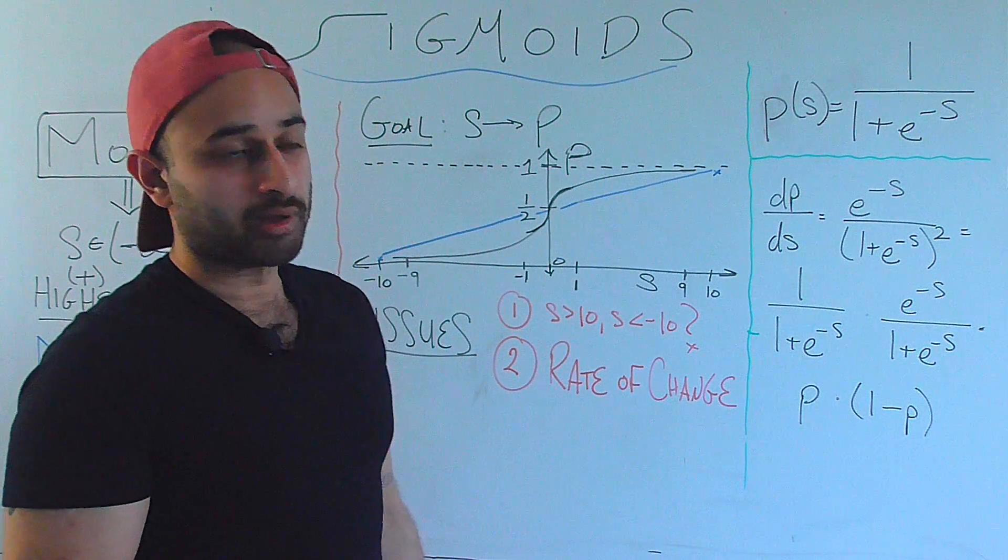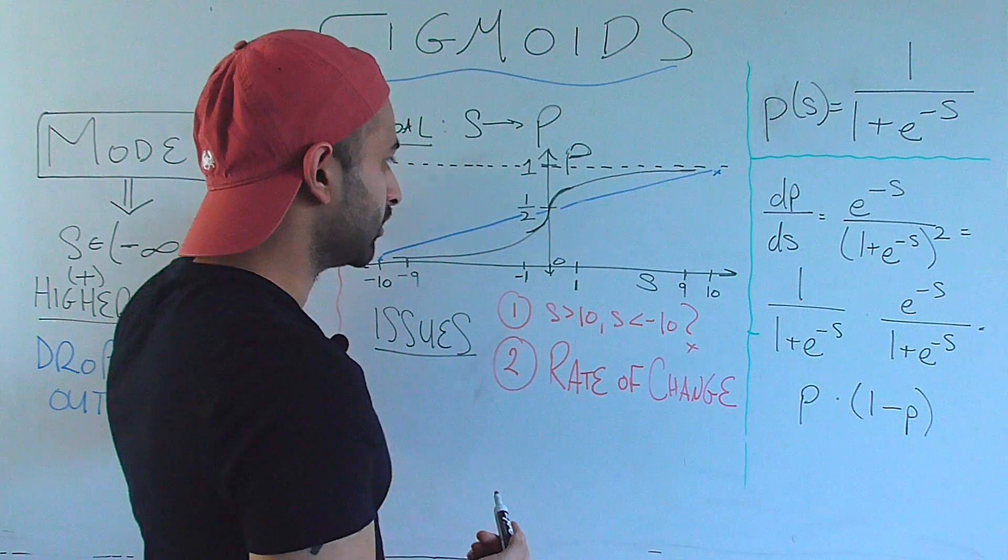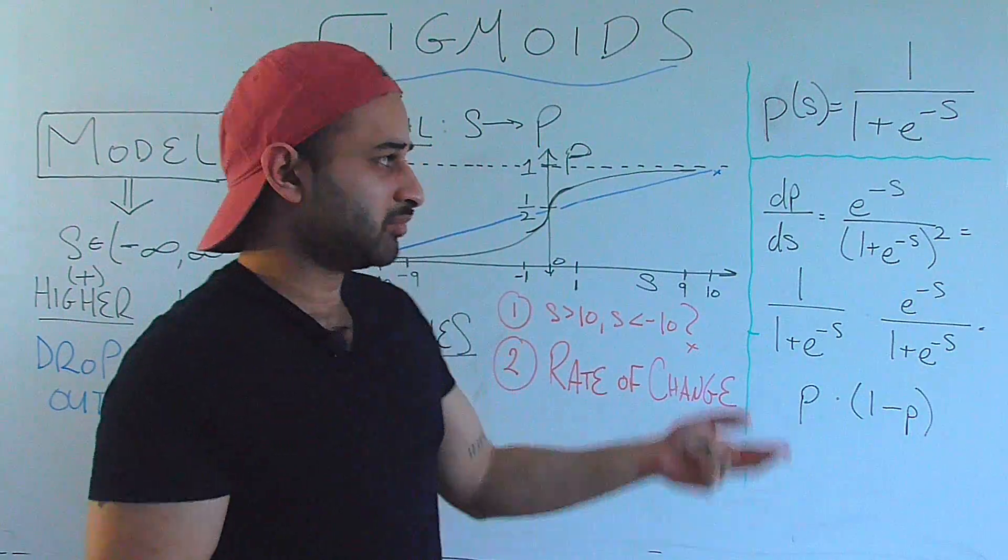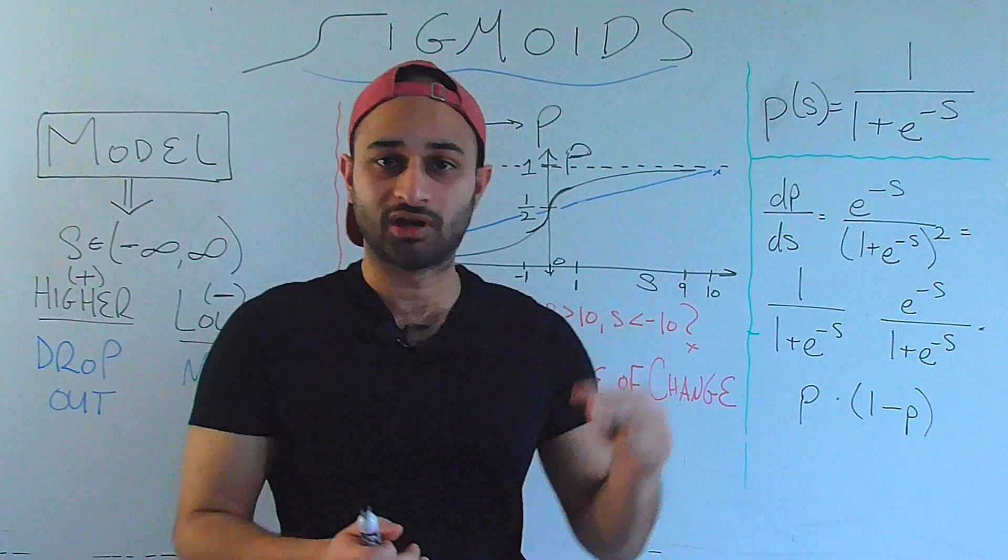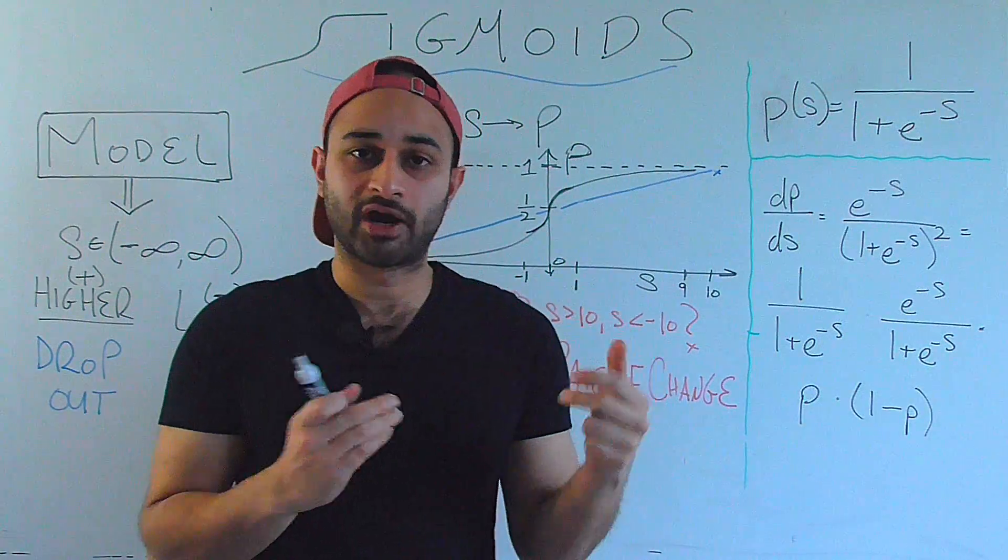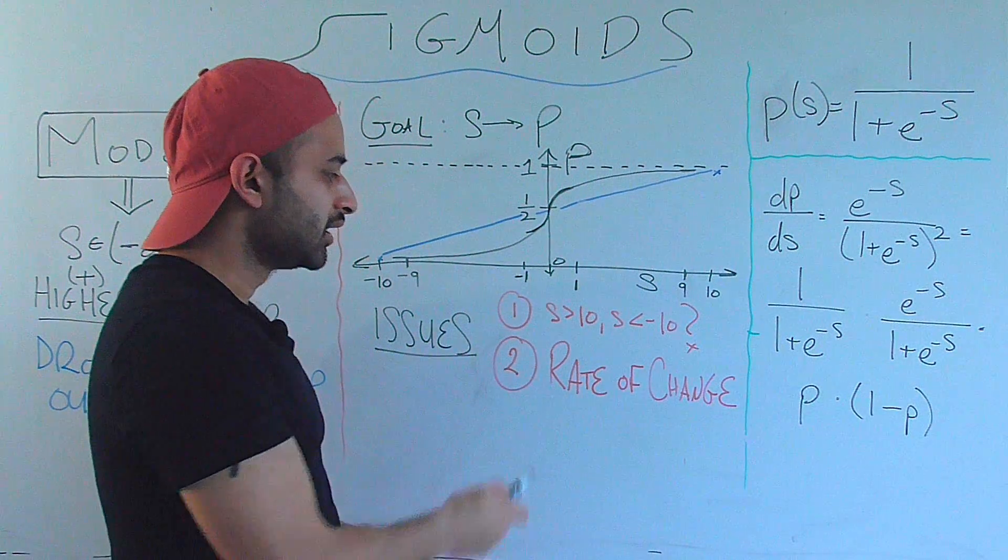It solves these two problems. Note it solves the first problem because the sigmoid is inherently bounded between 0 and 1. Even if I were to send the score over to a billion, it's obviously going to be pretty much 1, but the sigmoid never actually touches 1 or touches 0. So it always stays bounded no matter what the score would happen to be.